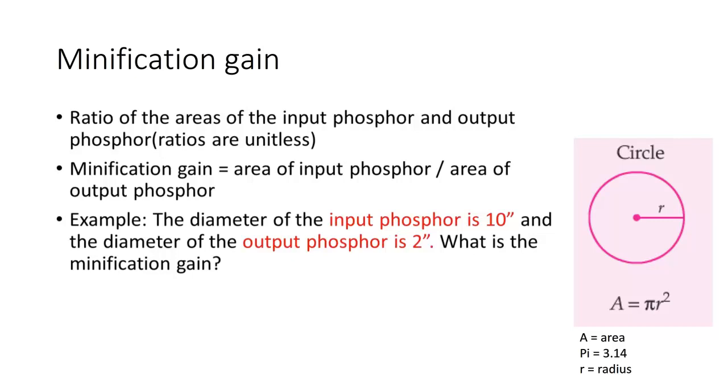The formula to find a circular area is pi r squared. Pi is a mathematical constant that is 3.141592, and it could go on and on. For the purpose of determining minification gain, we only have to round to 3.14, and r represents the radius of the circle. Pause here and do the example problem.